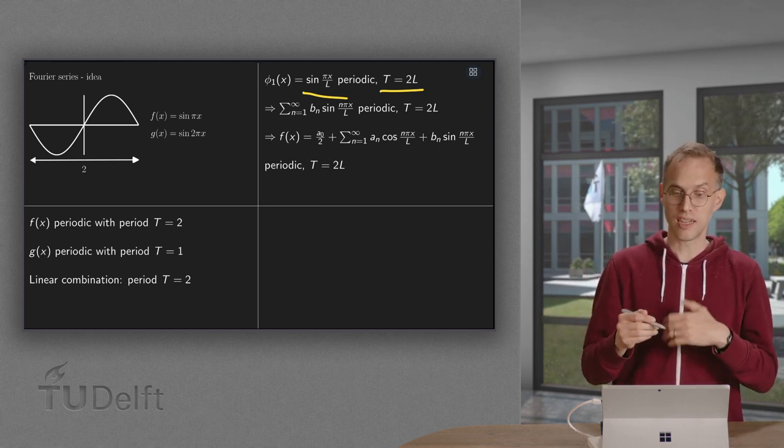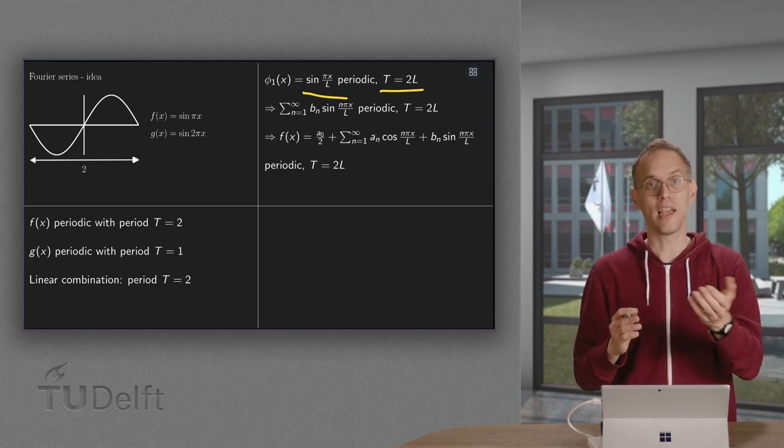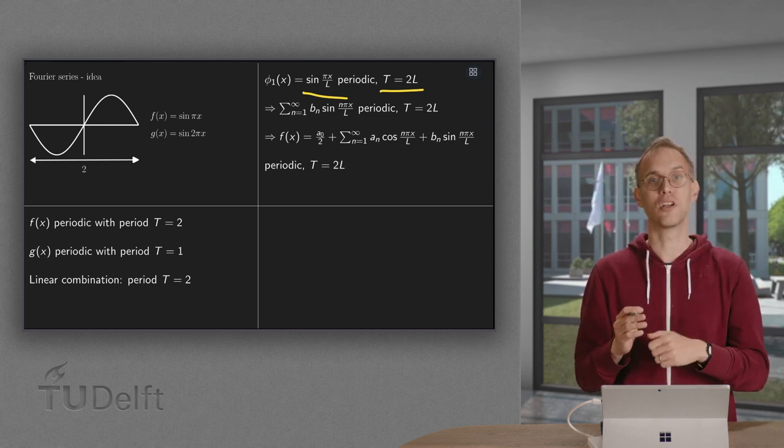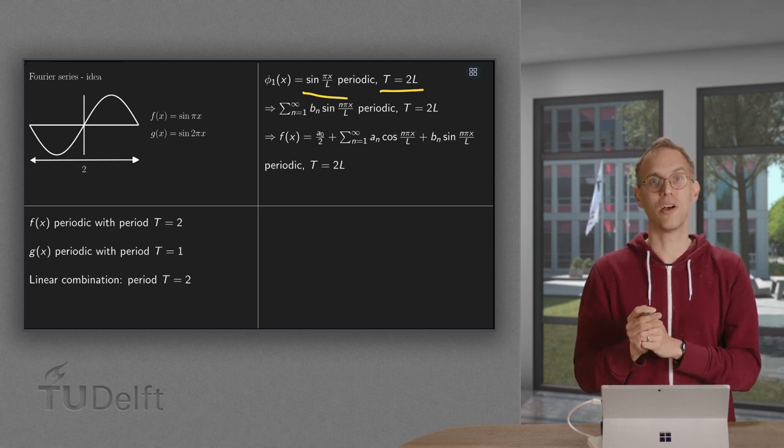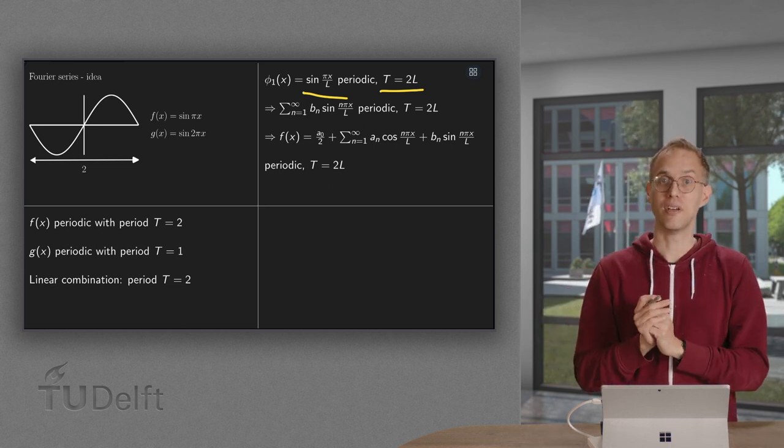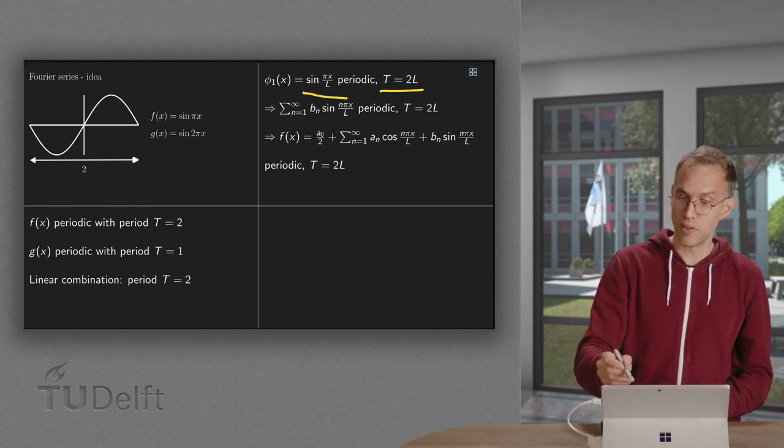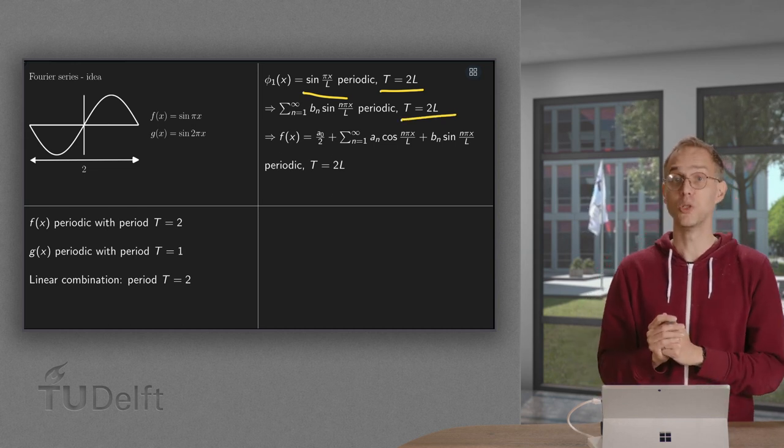If you take a linear combination of sin pi x over l, sin 2 pi x over l, sin 3 pi x over l, and so on, you will again have a periodic function with period t equals 2l.